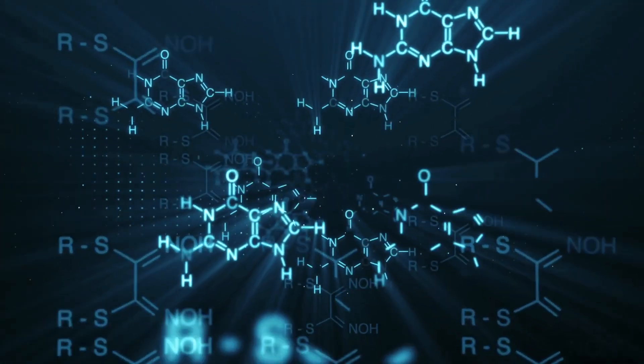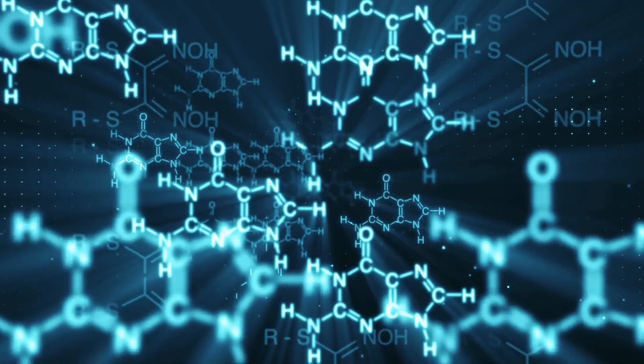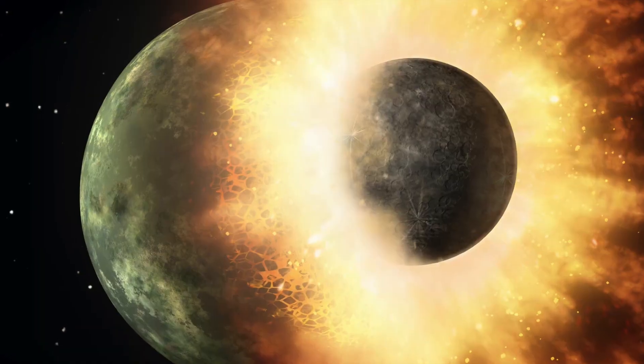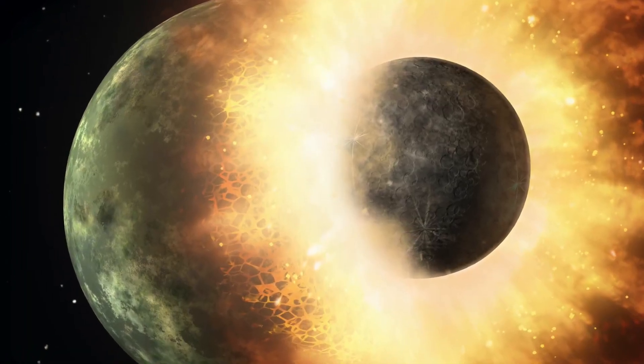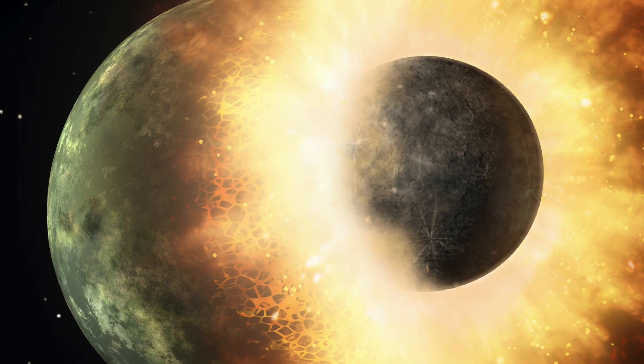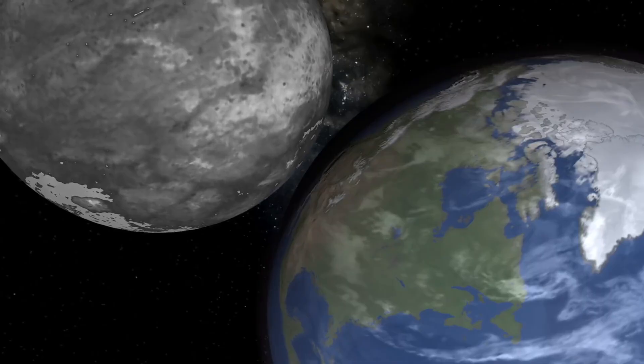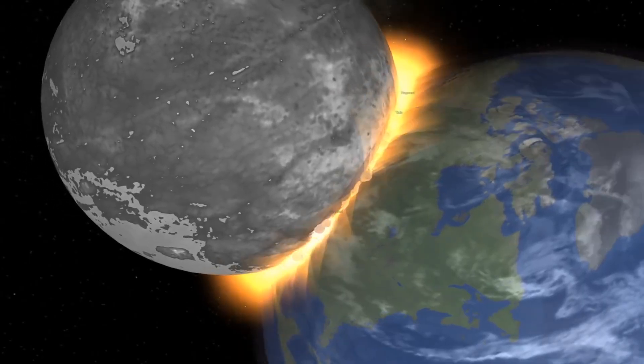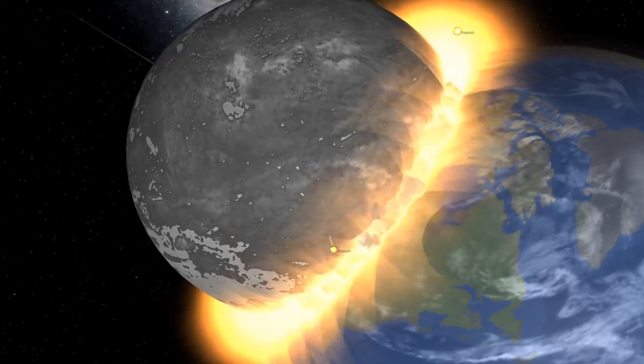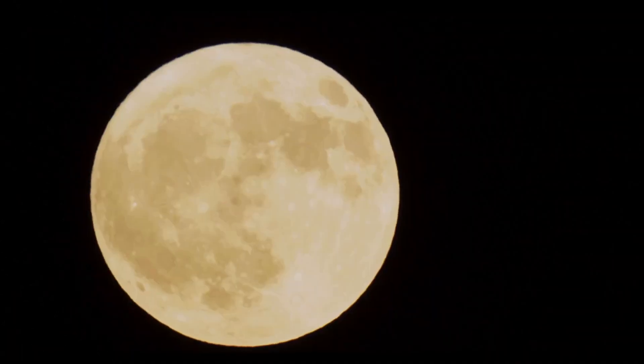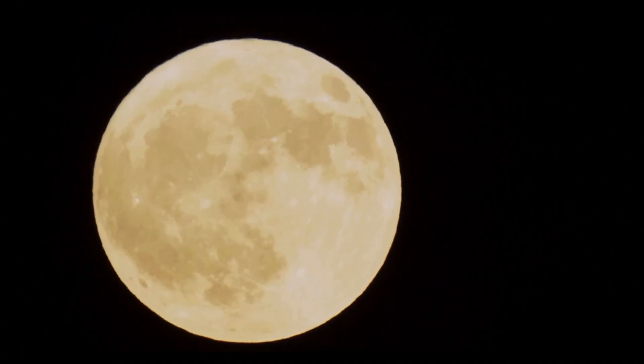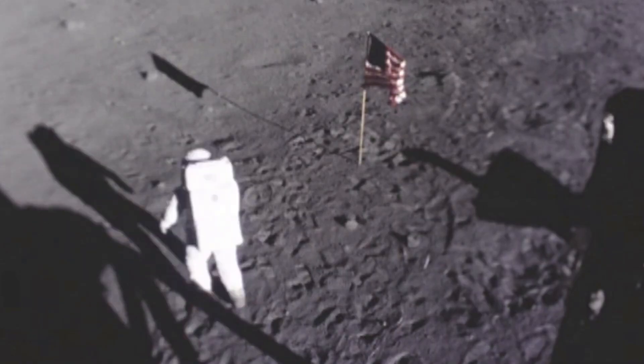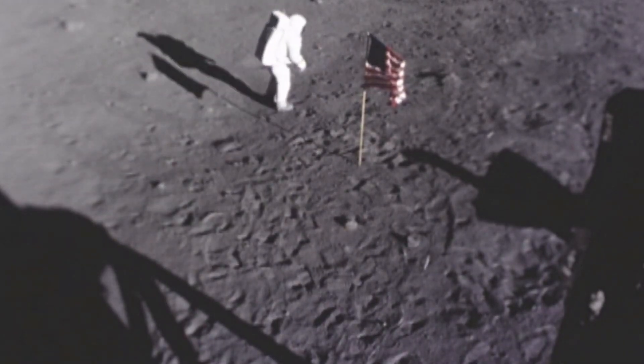Instead, the focus has now shifted to the point in time when the Earth was created in its present form. About 4.5 billion years ago, a protoplanet called Thea crashed on the primordial planet Earth. What was probably a gigantic cosmic spectacle has changed the Earth permanently. For one thing, the moon is said to have emerged from the debris of this collision. This was determined by means of samples taken after the moon landing.